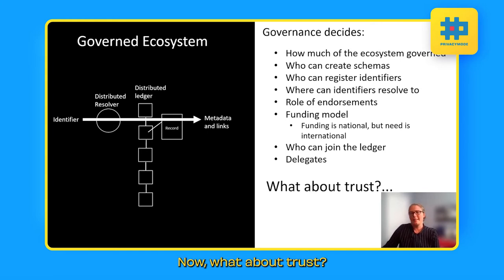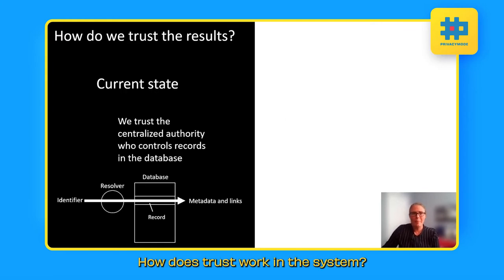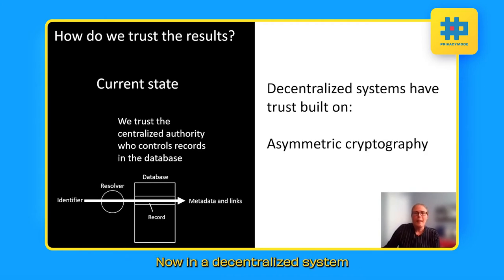Now, what about trust? How does trust work in the system? So how do we trust the results in the current state? What we do is we trust the centralized authority who controls the records in the database. So you have a number of people who are privileged to be able to log in and are allowed to edit records in the database. And we trust that the centralized authority is better.